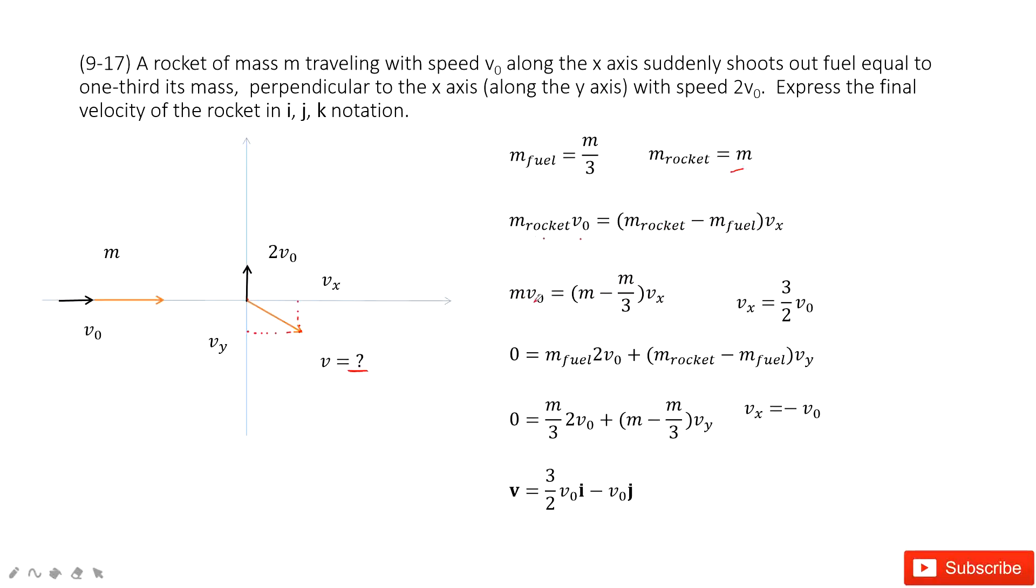Then we input the known quantities. The rocket is mass m, initial v0. So mass m minus m divided by 3, because fuel is one-third of the mass, times vx. So in this way, we can get vx.